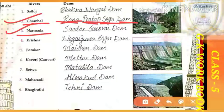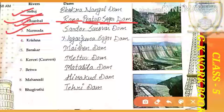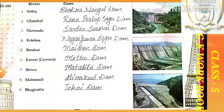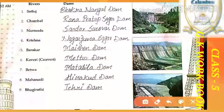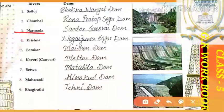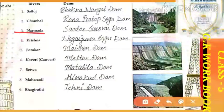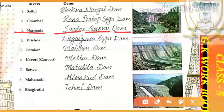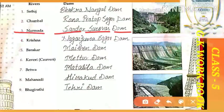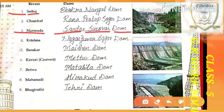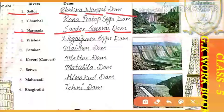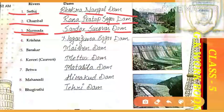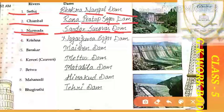The first river was Satluj, the second was Chambal, and the third is Narmada river. Which dam is situated on the Narmada river? That dam is called Sardar Sarovar Dam. Sardar Sarovar Dam. Clear?